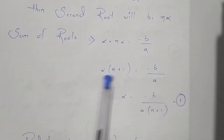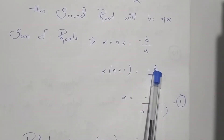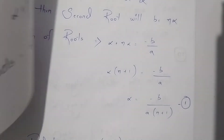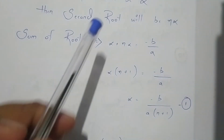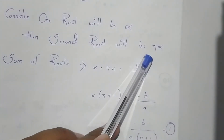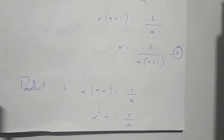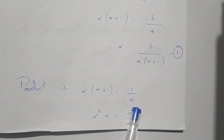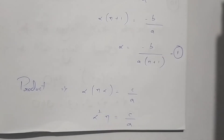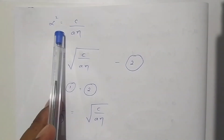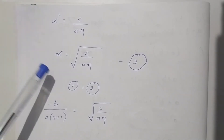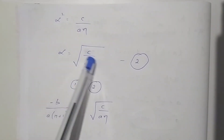Now for the product of roots, the product is c/a. The roots are alpha and n·alpha, so alpha × n·alpha = c/a. That gives n·alpha² = c/a, and therefore alpha² = c/(an). From this, the value of alpha is the square root of c/(an).